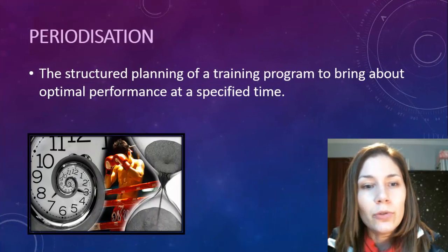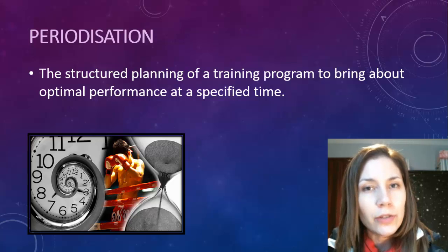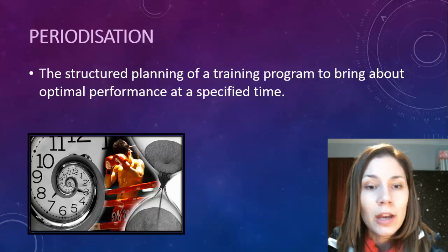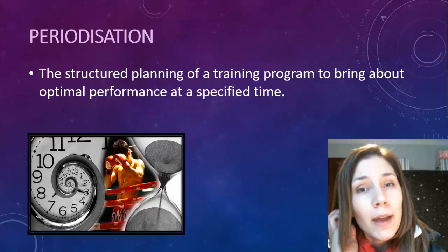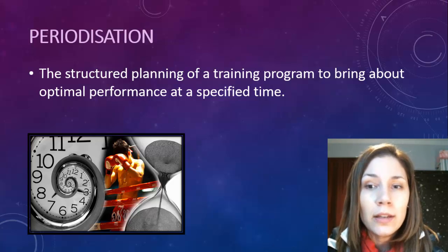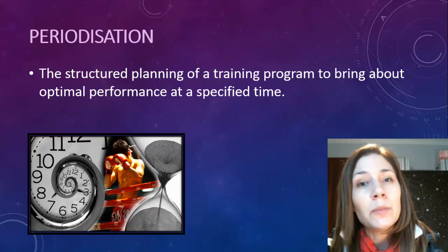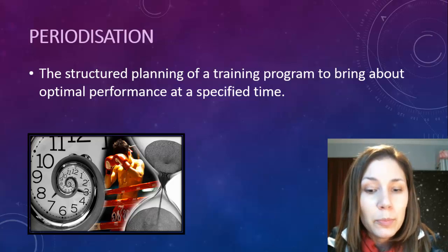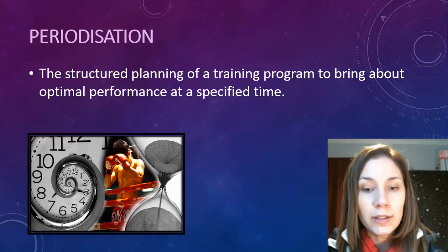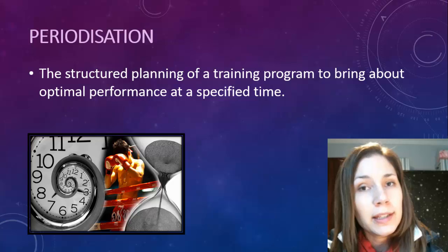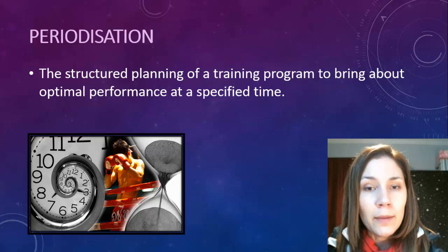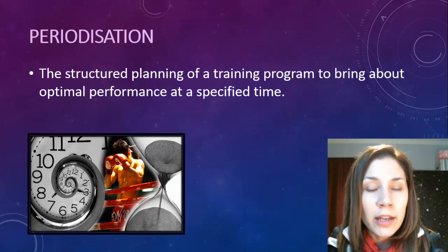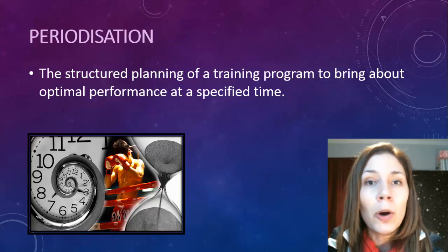Periodization is about making sure training schedules match when particular competitions come around. The AFL season is a perfect example — players train heavily during the season, have a short post-season break, then train very hard in pre-season, boosting muscular power, aerobic and anaerobic capacity. They then play through pre-season before the actual season begins. Their training intensities differ throughout the year, and in-season matches contribute to fitness so training volume can drop off slightly.